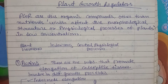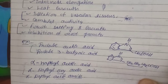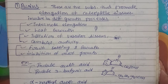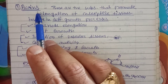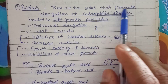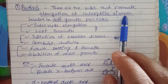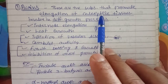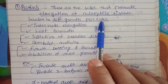We are having three types of regulators and two types of inhibitors. We will discuss one by one. The first one is auxin. This has been arranged in notes in such a way so that it will be easy to remember. Auxins are the substances that promote elongation of coleoptile tissues. They are involved in different growth processes.